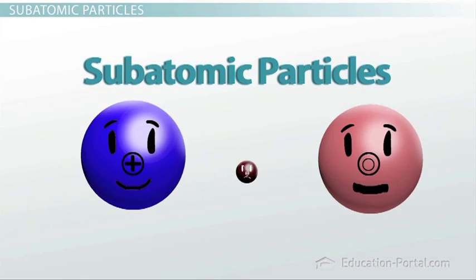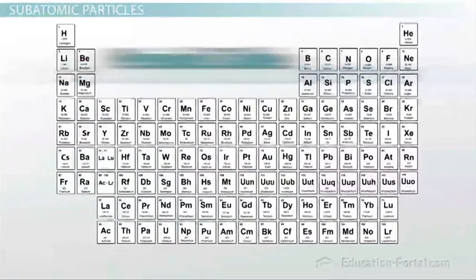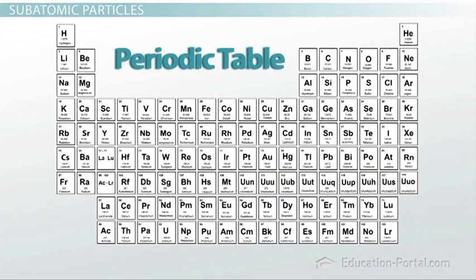As we move through this lesson, I would highly recommend having a periodic table in front of you as a reference. The periodic table is an organized reference of all the known elements arranged according to their properties. You will almost always have access to one of these, so it would be a good idea to learn how to use it.